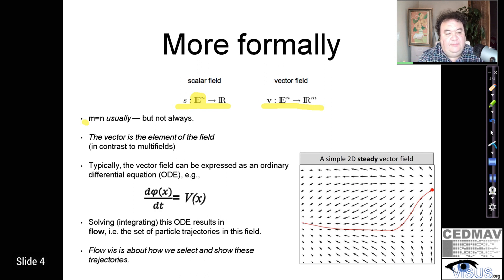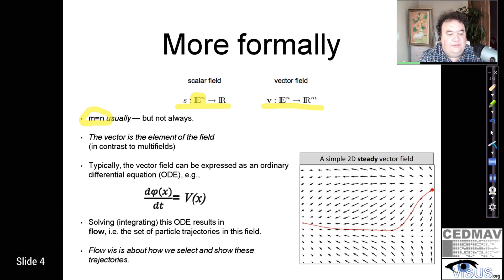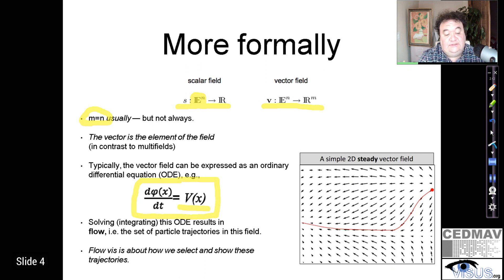In the case of a vector field, the same n-dimensional domain points are mapped to a tuple of m values — m-dimensional vectors. In practical applications, n and m are the same; in 2D, every vector is a two-dimensional vector. If we express a vector field in terms of an ordinary differential equation, we get a formulation where the derivative over time equals the vector field, and solving this representation allows us to map the vector field into an actual flow.